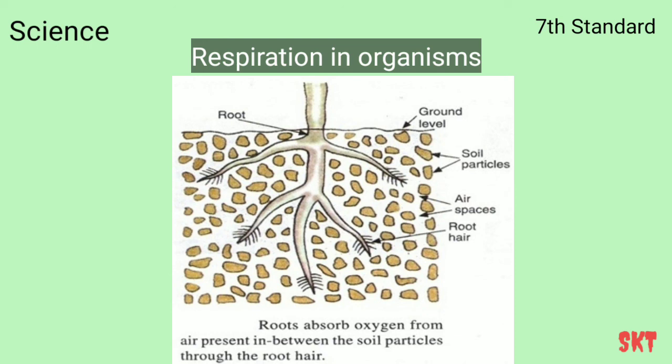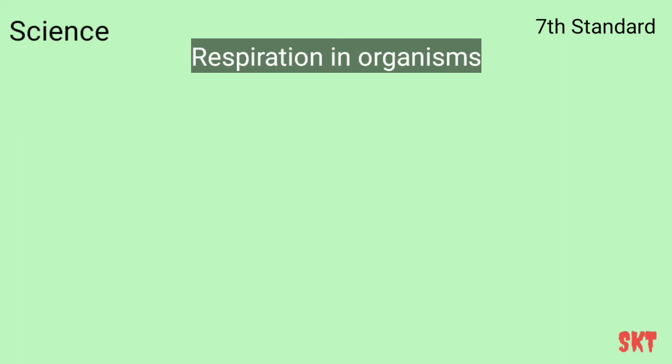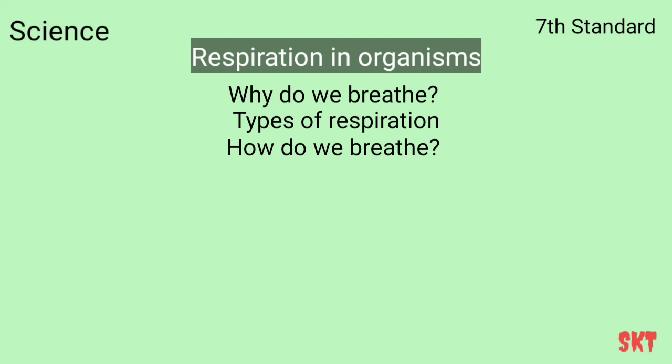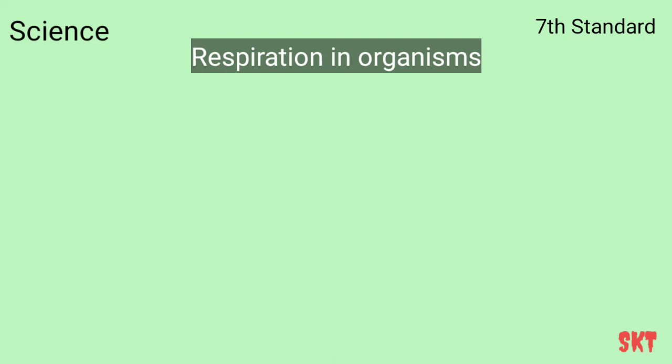That's the end of this chapter. Let us recall what we have learnt: why we respire, the two types of respiration — aerobic and anaerobic — how muscle cells do anaerobic respiration, exhalation and inhalation and breathing rates, how we breathe and the structure of lungs and how they work during inhalation and exhalation, and finally breathing in other animals such as cockroaches, earthworms, fishes, and also in plants. Thank you for watching this video and make sure to subscribe.